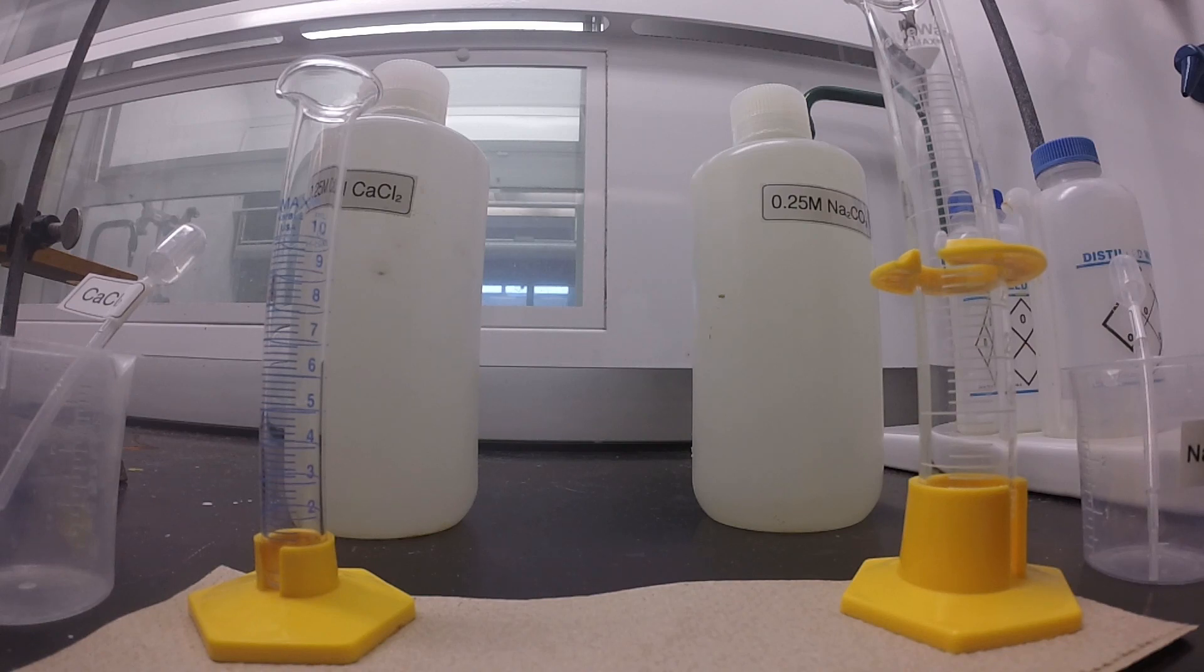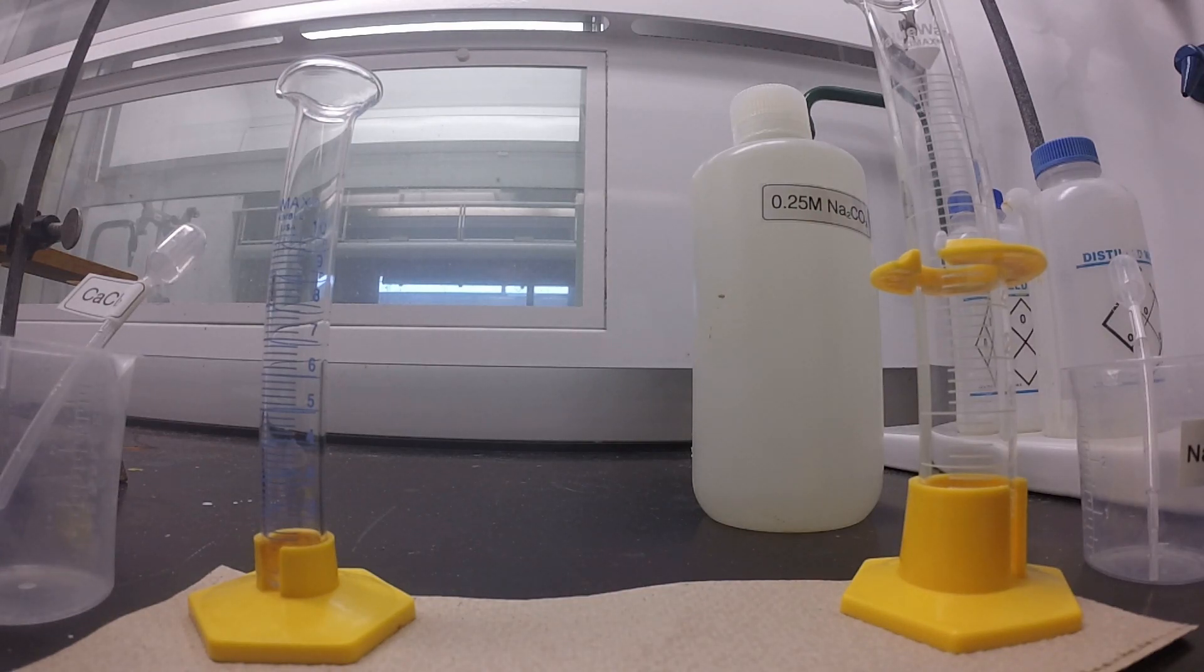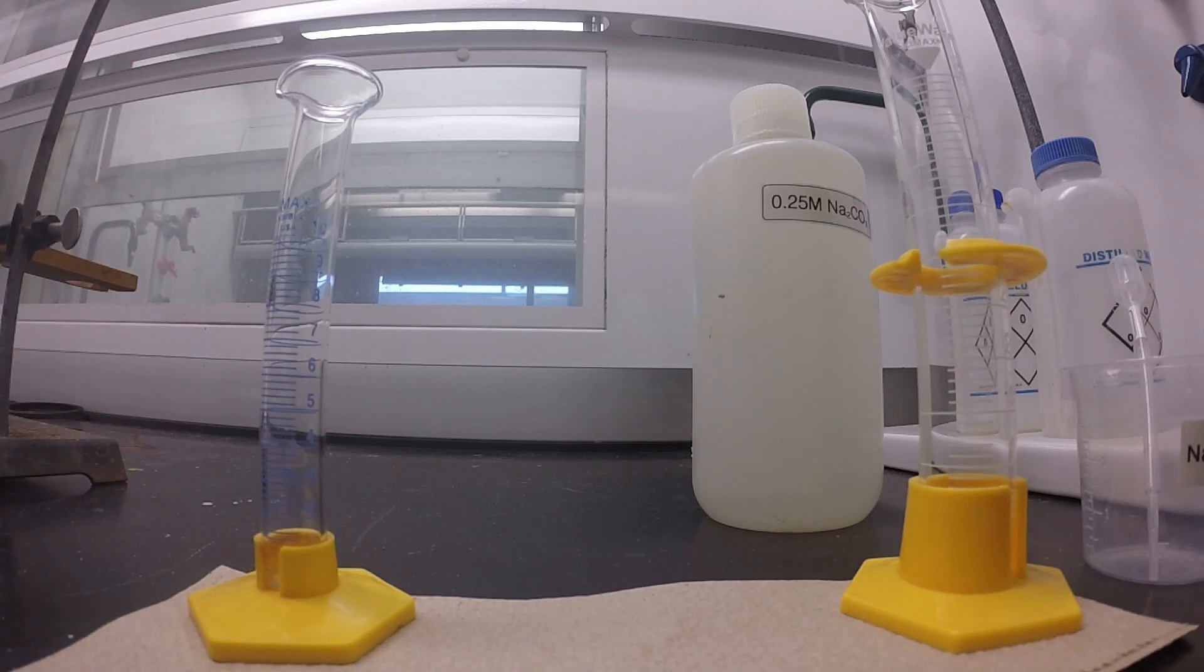We have two solutions we're going to use in this experiment: 0.25 molar calcium chloride and 0.25 molar sodium carbonate. We're going to start by pouring out each of the solutions into a small beaker. This is going to make it easier to measure in the graduated cylinder.